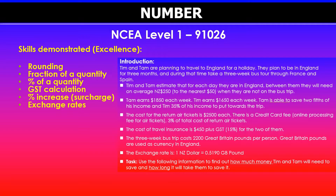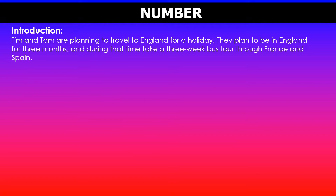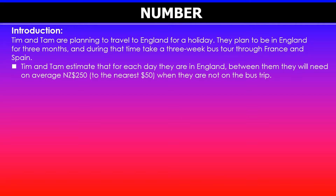We'll quickly have a look at the example. Tim and Tam are planning to travel to England for a holiday. They plan to be in England for three months, and during that time, take a three-week bus tour through France and Spain. The first thing is they're able to estimate that for each day they will be spending in England, between them, they will need on average $250. Remember, this is rounded to the nearest $50, so that's just an average. We will need to look at rounding and using this info to find the minimum and maximum daily cost they will need while they are not on the bus trip.